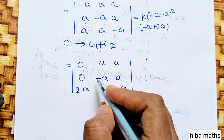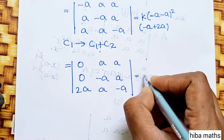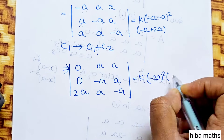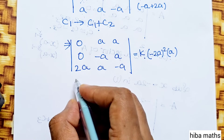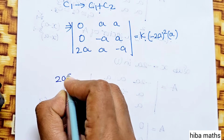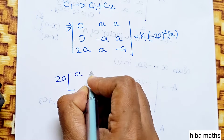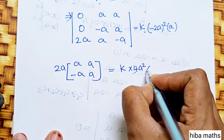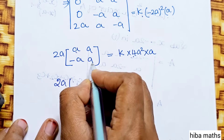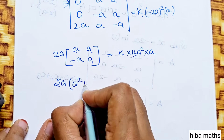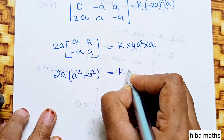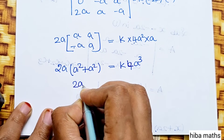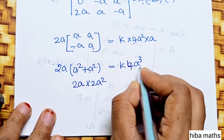We apply operations to C1, C2, and C3. On the right-hand side, we have k into (minus 2a minus a), giving (minus 2a) whole square, then (2a minus a). After changing C1 and computing the second row, we get 2a into a into a squared. Simplifying: minus a squared plus a squared into a squared equals k times 4a cubed. Then 2a squared, and in 4a cubed we get k.